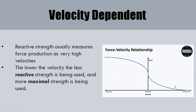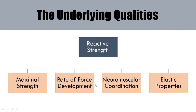When we shift more toward the force end of the force-velocity curve, we're using more maximal strength and less reactive strength — we would term that more power. The underlying qualities of reactive strength are: maximal strength, rate of force development, coordination — knowing exactly when to time muscle contractions — and the elastic properties of the muscle-tendon unit, which relates to the stretch shortening cycle.